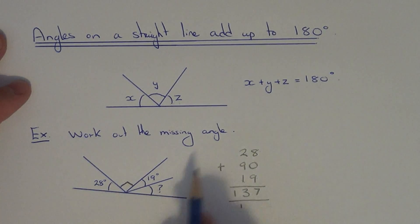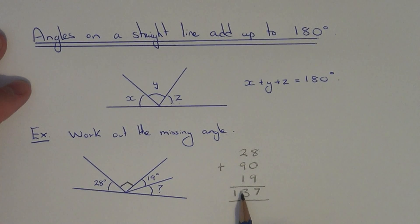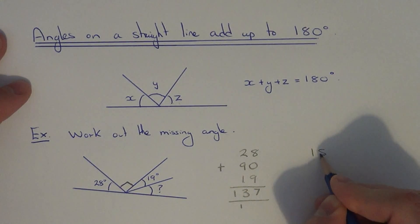Since we know that angles on a straight line add up to 180, we just need to subtract this answer from 180.